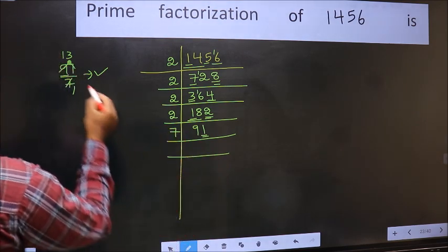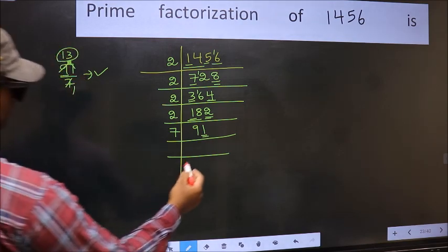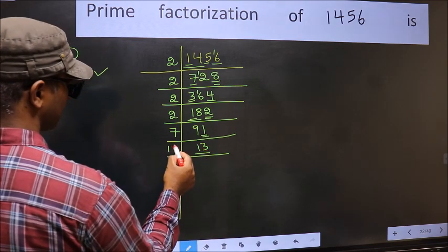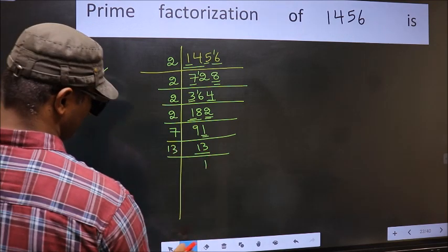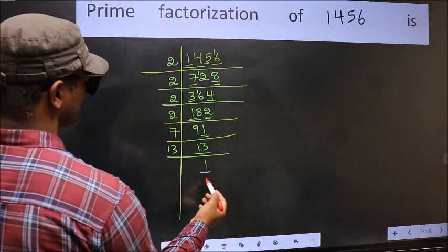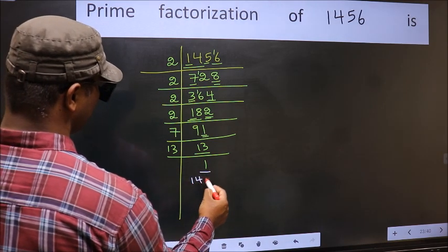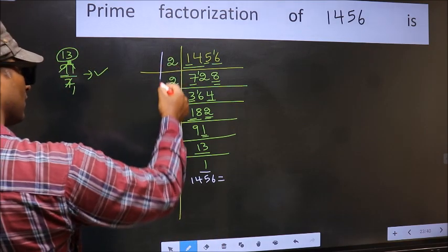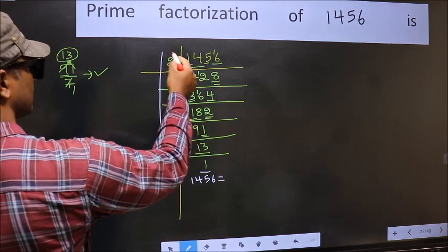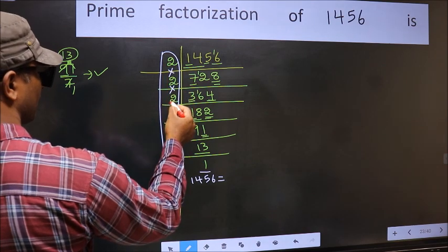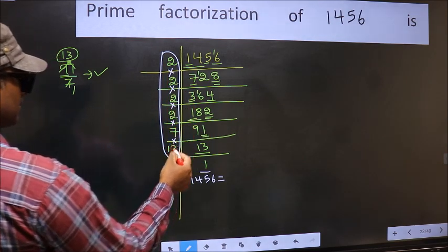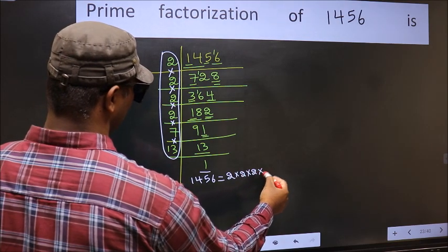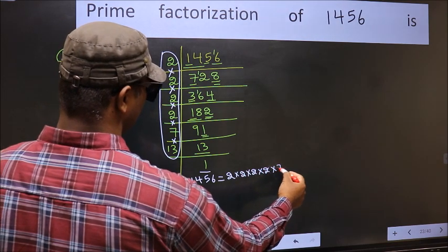So 7 here. And here we write this number: 13. Now we have 13. 13 is a prime number, so 13 ones are 13. So we got 1 here. So the prime factorization of 1456 is the product of these numbers: 2 into 2 into 2 into 2 into 2 into 2 into 7 into 13.